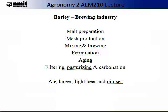This is followed by fermentation. The cooked wort is cooled and yeast is added. The yeast converts sugar to ethanol and carbon dioxide. Different types of yeast produce beer with distinct characteristics. Bottom fermenting yeast produce lagers whereas top fermenting yeast produce ales.